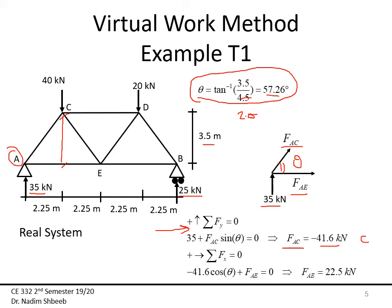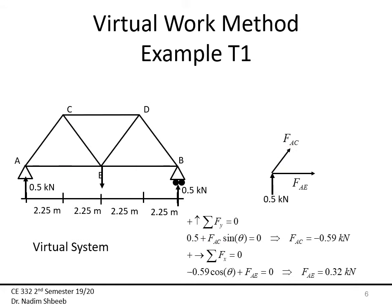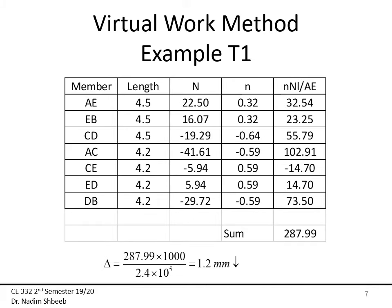Summation of Fy equals zero: 35 plus FAC sine theta equals zero, which gives me FAC to be minus 41.6 kilonewtons. Then doing summation of Fx equals zero: minus 41.6, which is in compression, times cosine theta plus FAE equals zero, and I'll get FAE to be 22.5 kilonewtons in tension. For the virtual system, I'm going to do the same. Since it is symmetric, this is going to be one half and this is also going to be one half kilonewton.